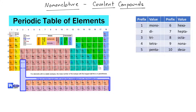This video is about naming binary covalent compounds. We use the term binary to indicate that there are only two elements in the compound. The rules for nomenclature are different if you're naming ionic compounds versus covalent compounds, so the first thing you want to do is figure out if you have a binary covalent compound or a binary ionic compound.